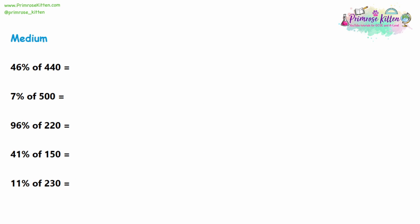Now we're gonna move on to the medium questions. With the easy questions, you could have done a lot of those in your head, but with these medium questions the written method would take quite a long time and we can't confirm the answers in our head. So same method: starting off with 46%. The tens column is the first decimal place and the units column is the second, giving us 0.46. We're multiplying by 440. Type in 0.46 multiplied by 440 and you should get an answer of 202.4.